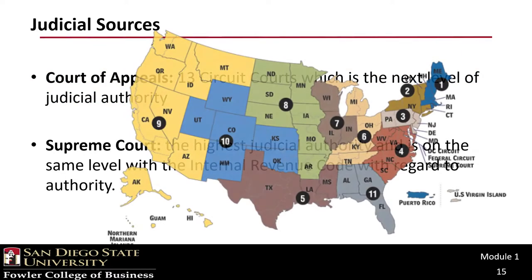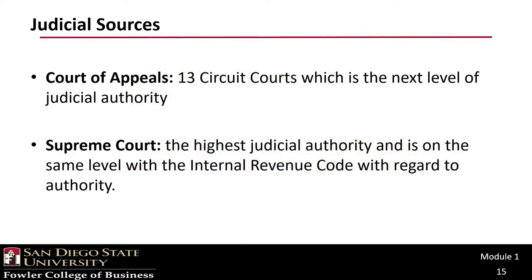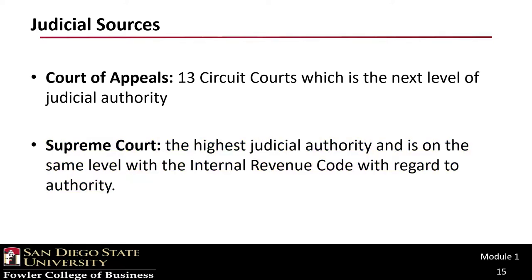There are 13 circuits in the U.S. that are defined geographically. San Diego, and all of California for that matter, are inside the Ninth Circuit. If you lose at the appellate courts, your last hope is the Supreme Court. You must petition the Supreme Court, and they are not required to hear your case. Of course, if you lose at the Supreme Court, your next appeal is, I guess, to God — so good luck with that.